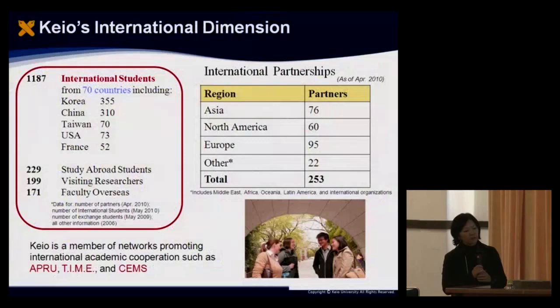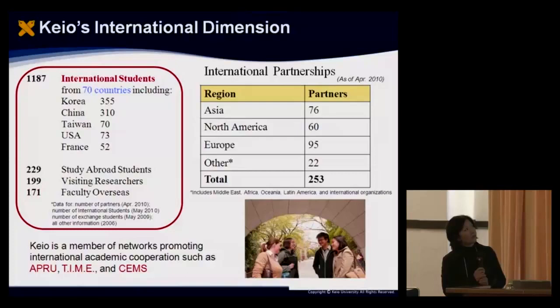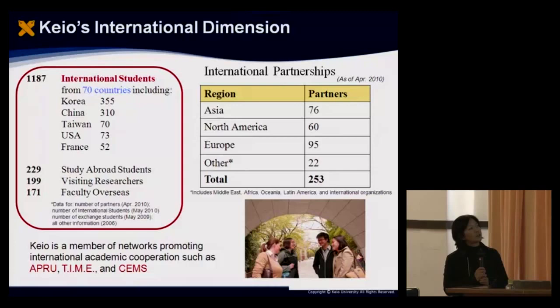This is a very brief overview of Keio University's international dimension. Overall, we have just over 1,000 — nearly 1,200 — international students, similar to other Japanese universities, with most coming from Korea, China, Taiwan, the USA, and France. We have just over 220, around 230 study abroad students, and nearly 200 visiting researchers throughout the year, and many faculty members who go overseas.